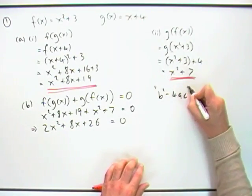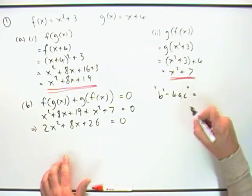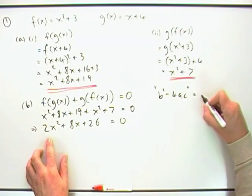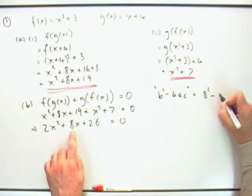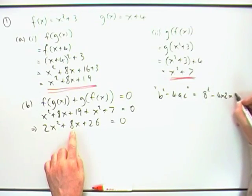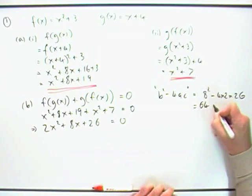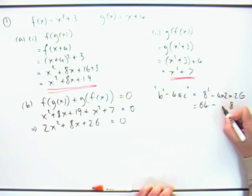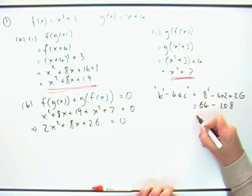b squared minus 4ac. I'll put that in a new bracket, because there was no b's or anything mentioned. Sorry, inverted commas. So what have I got? I've got 8 squared minus 4 times 2 times 26. 64 minus 8 times that, 8, 6 is 48, 4 over, so that's going to be 208.